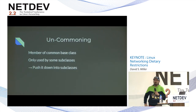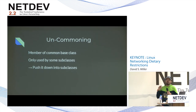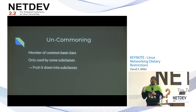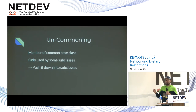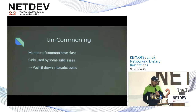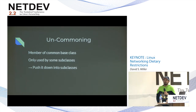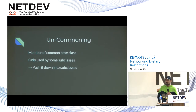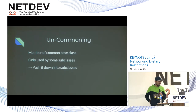What is this thing I called uncommoning? Uncommoning deals with the situation where members of a common base class are only used by some of the subclasses. What tends to happen when we design data structures is we have several types — an IPv4 route, an IPv6 route, an IPsec route — and we try to see what's common amongst them and put it into the base class. However, over time some subclasses stop using those common dst_entry members, and we haven't updated dst_entry to reflect this. In many cases a common entry in the struct is only used by one subclass, which is absolutely inappropriate. We should push it down to the subclasses that actually use it.